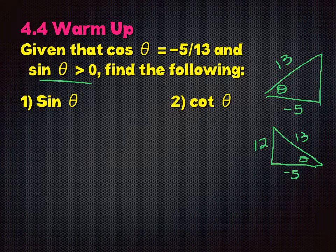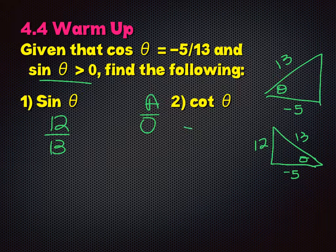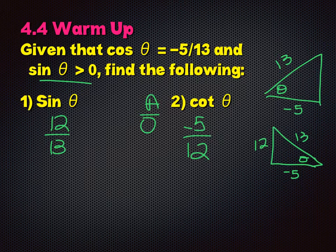You need to use both pieces of information — cosine negative, sine positive — to know which quadrant the triangle lies in. Then sine is opposite over hypotenuse, which is 12 over 13. And cotangent is adjacent over opposite, which is negative 5 over 12. Most, if not all of you got that right.